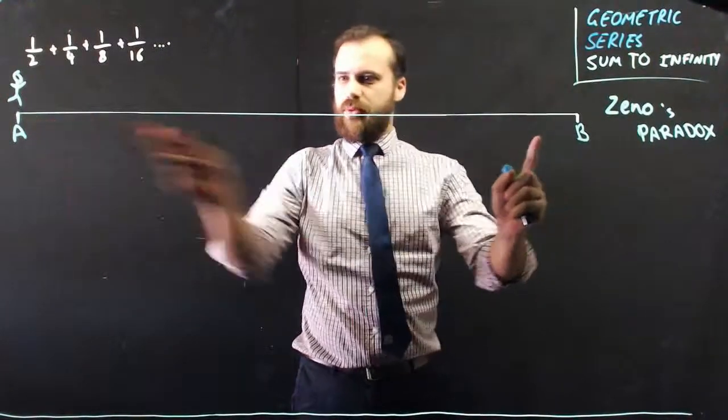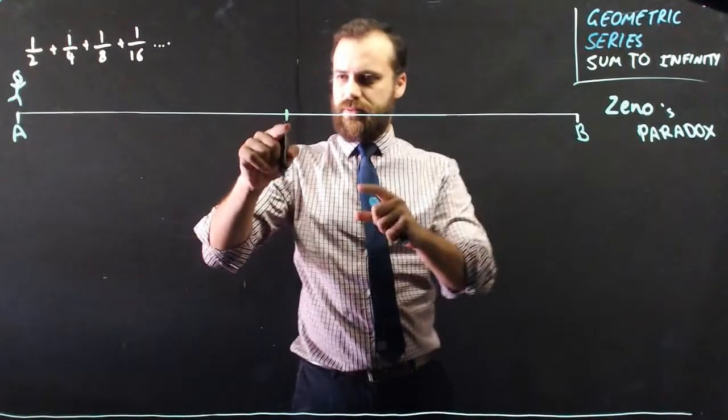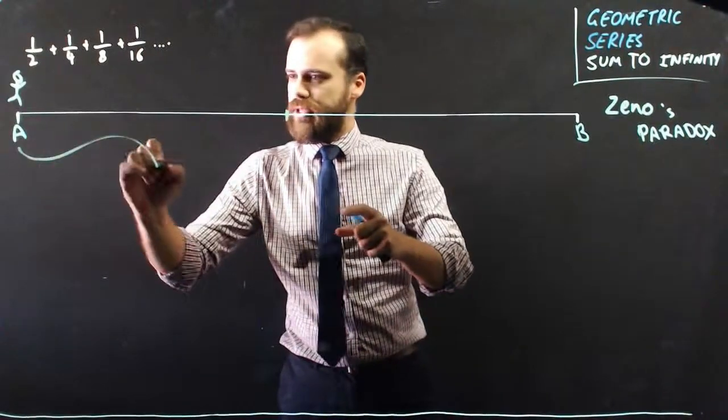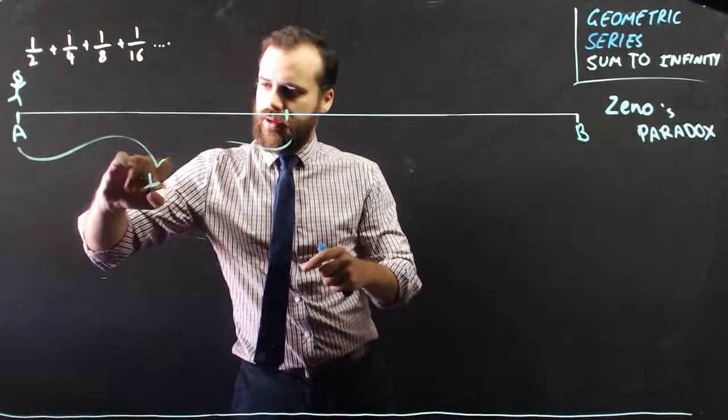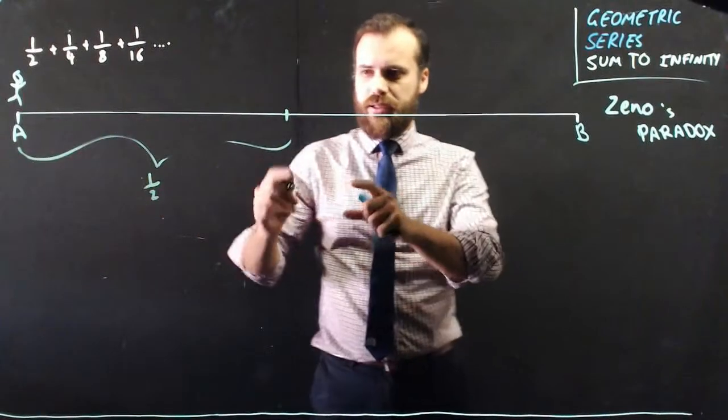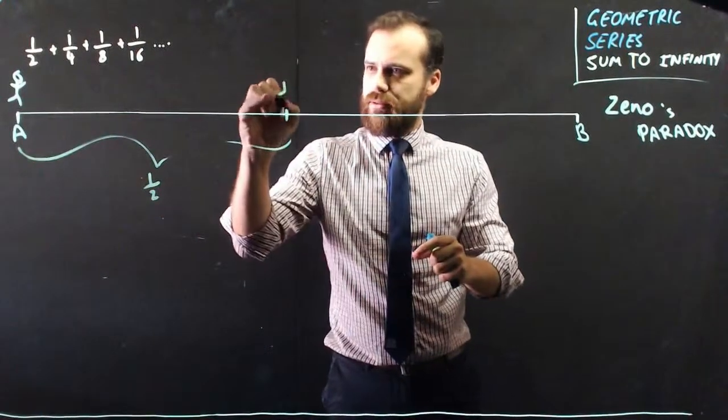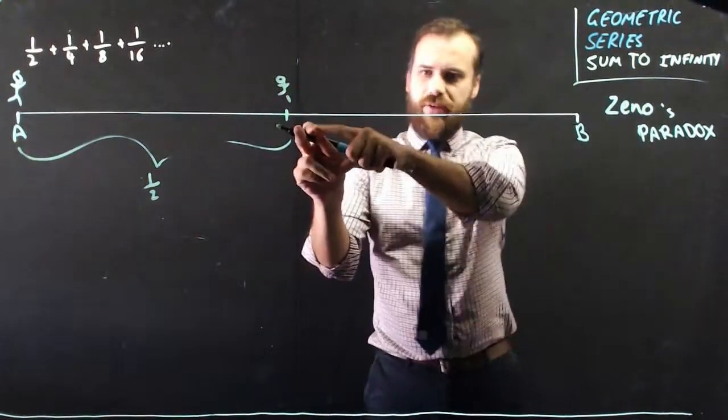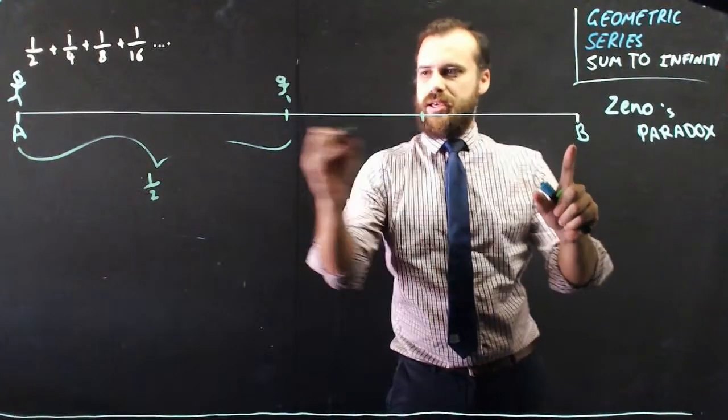Specifically, what Zeno said was he had to get halfway. So he has to travel all of this distance. He has to travel one half of the way. And then once he gets there, he needs to travel half of here.